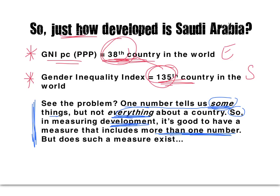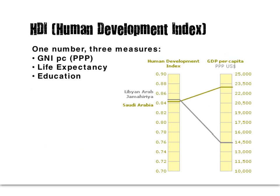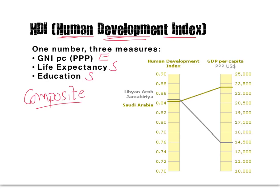So for development, it's good to have more than one number. The question is: does such a measure exist? The answer is yes — it's called the Human Development Index. This is one number with three measures in it. It includes an economic measure, the GNI per capita adjusted for purchasing power parity, and then it includes two social measures: life expectancy and some measures of education. When you look at this, it's called a composite measure of development because it is composed of more than one element.